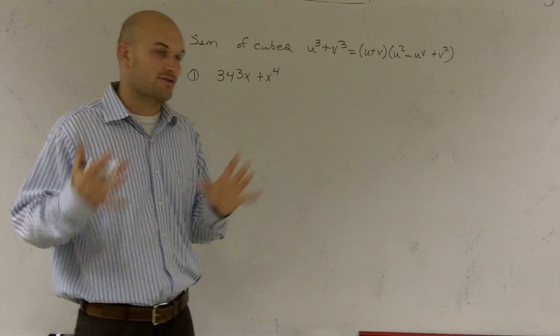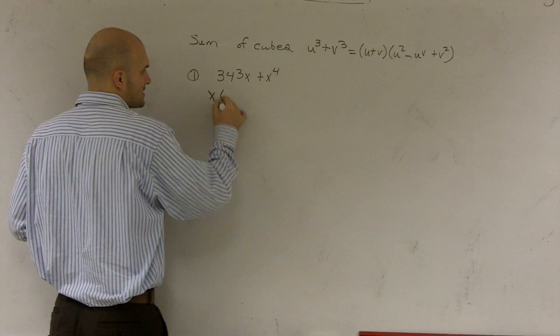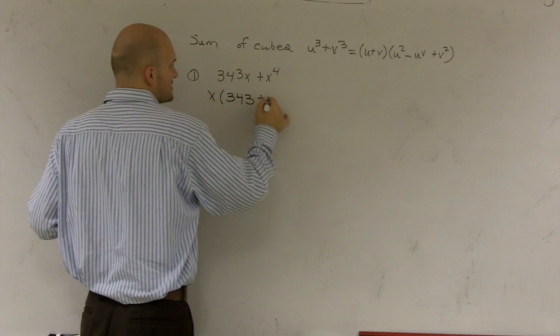Greatest common factor. So I can factor out an x. So I'll factor out an x here. So I'm left with 343 plus x cubed.